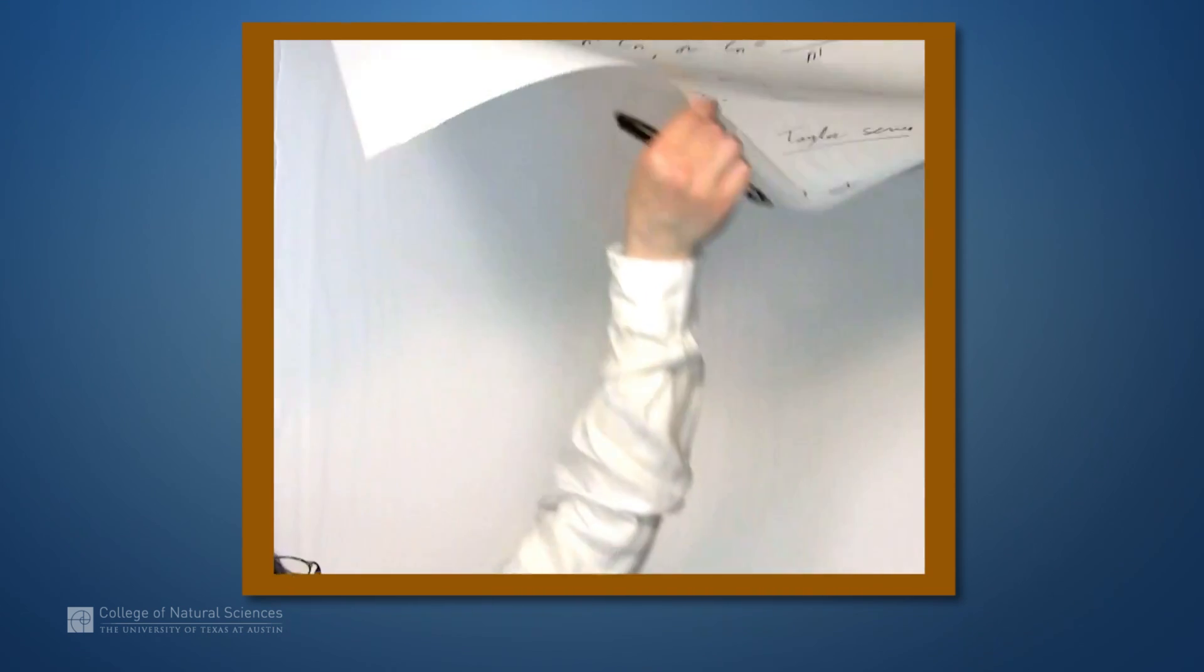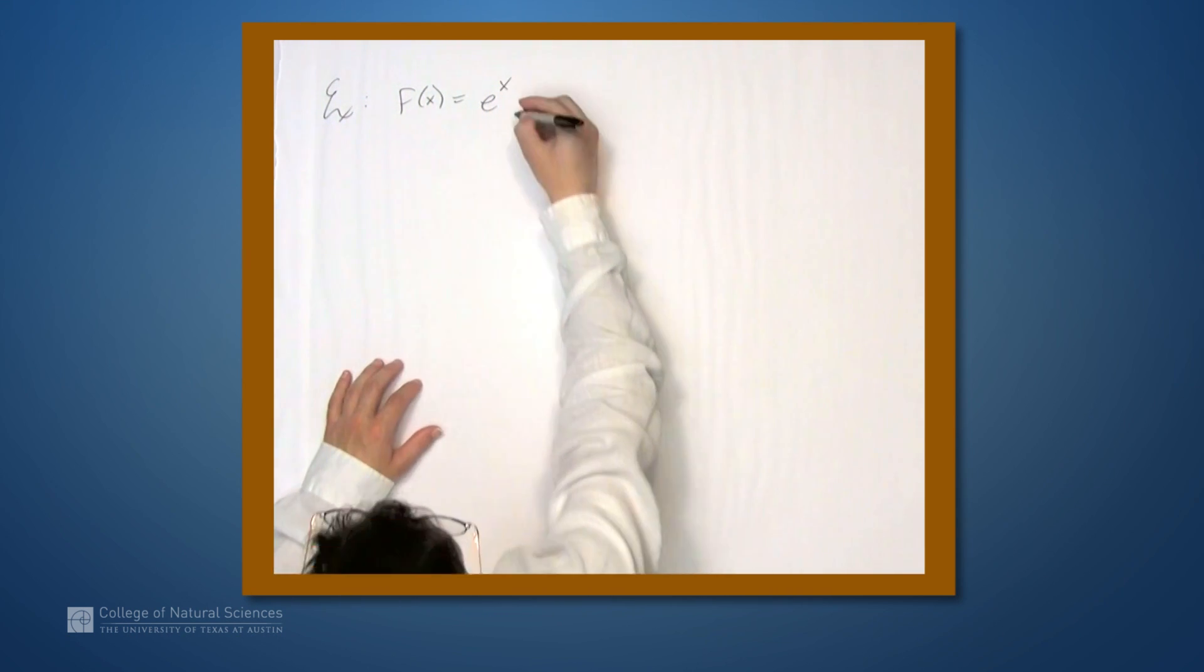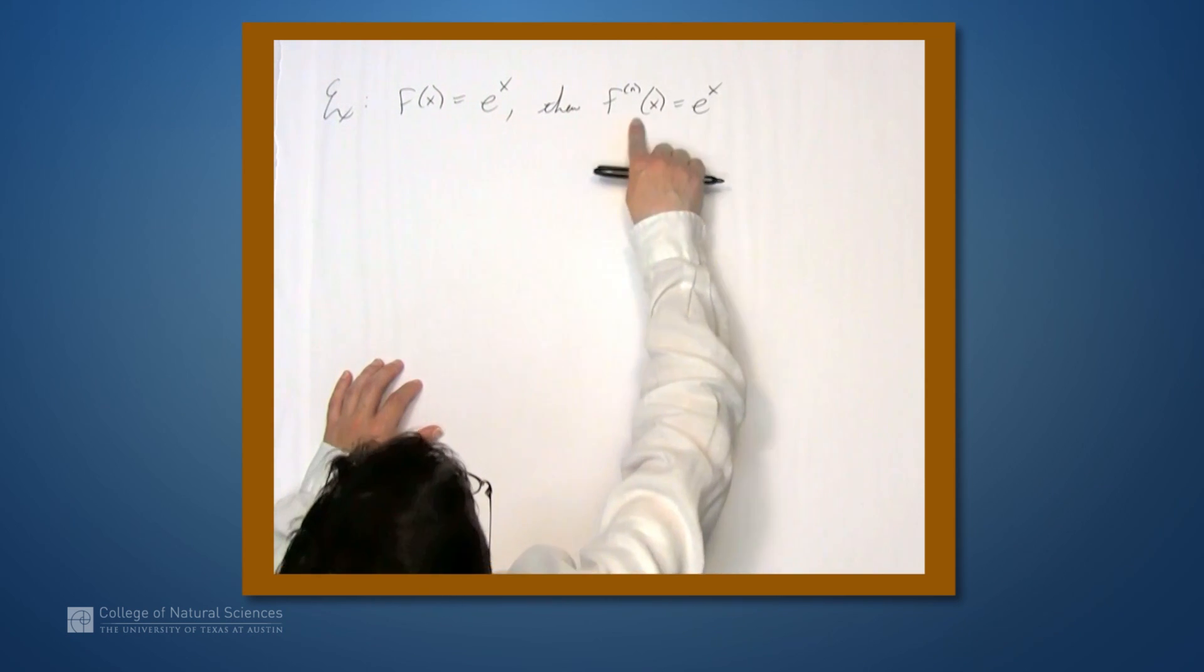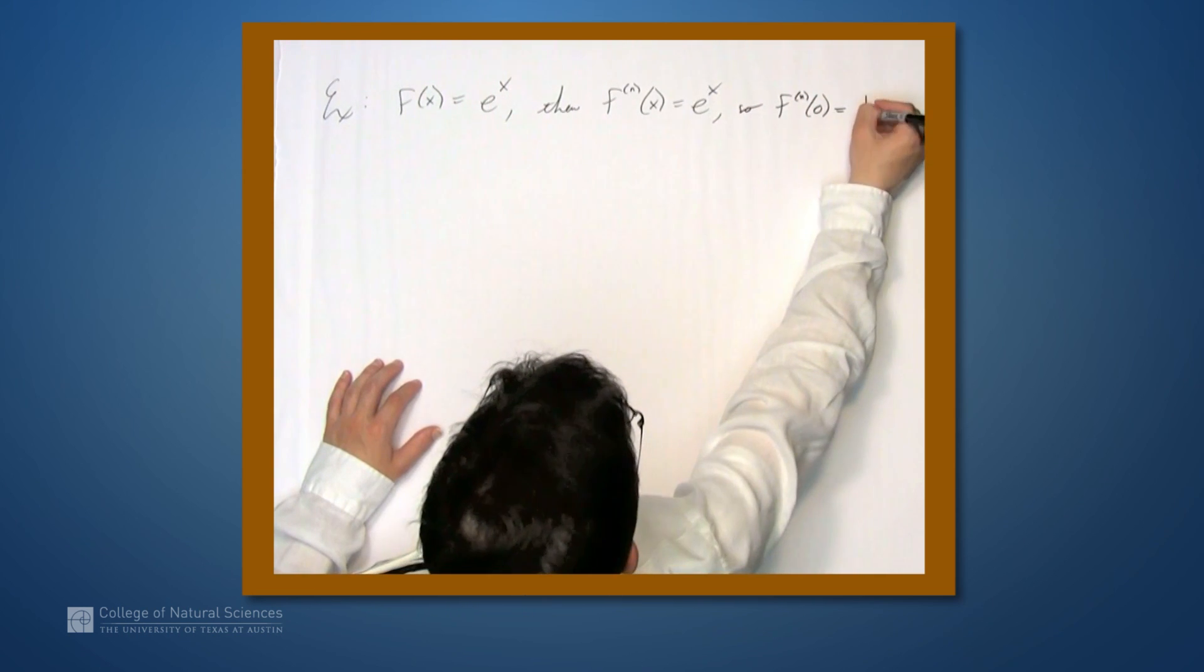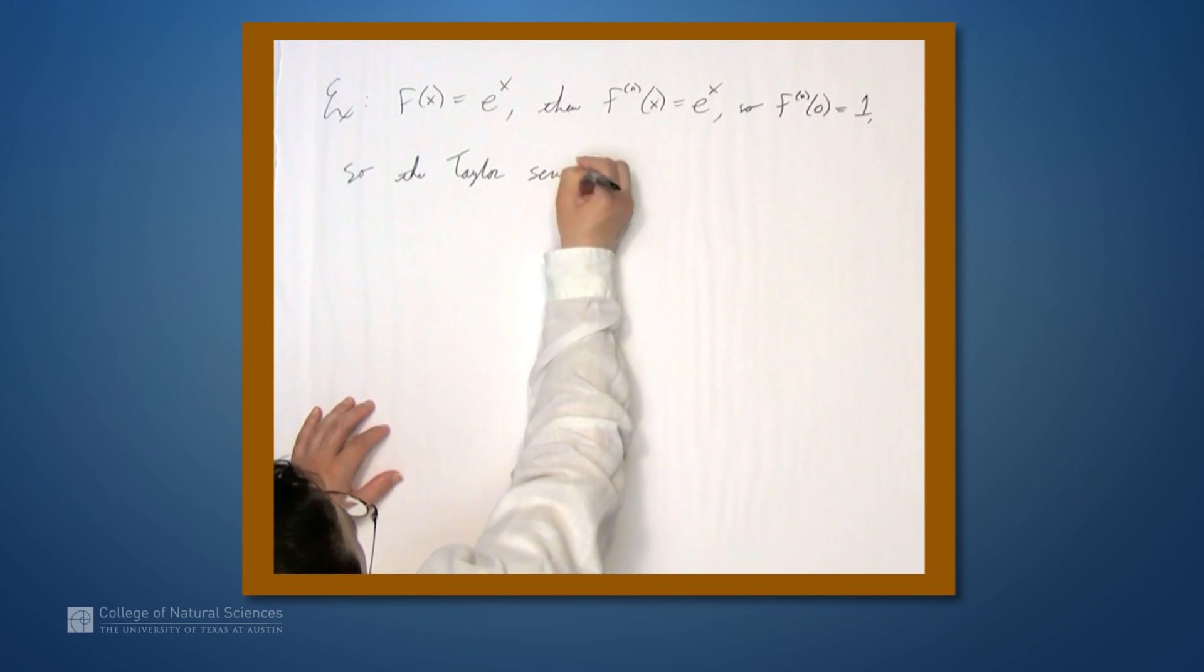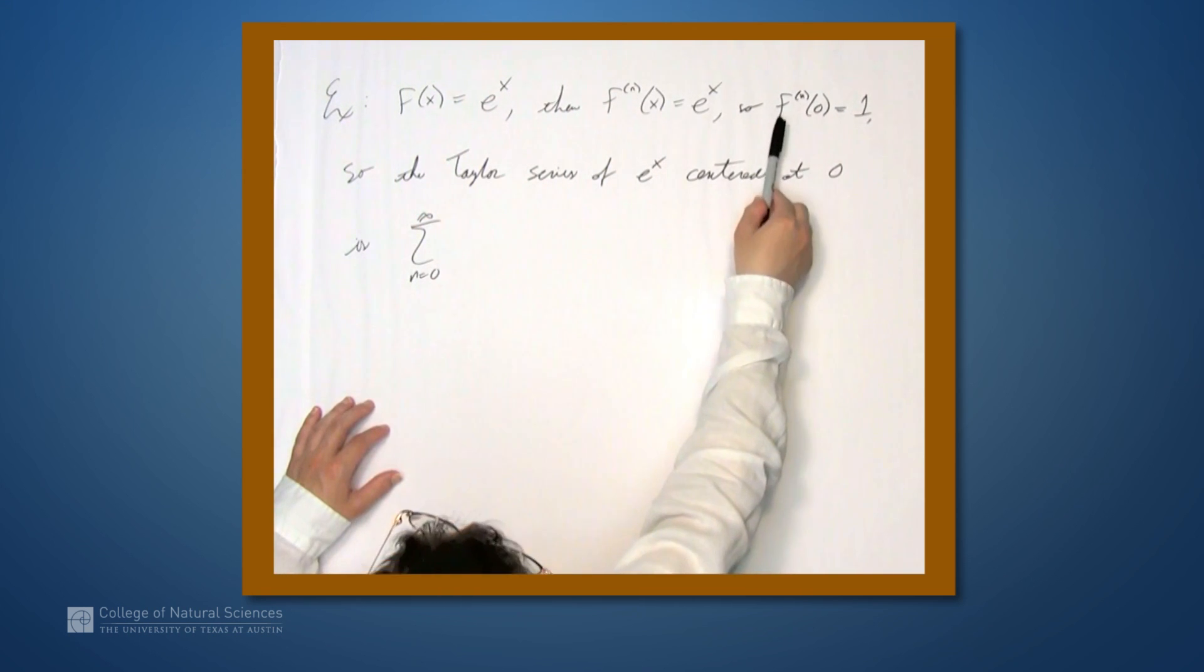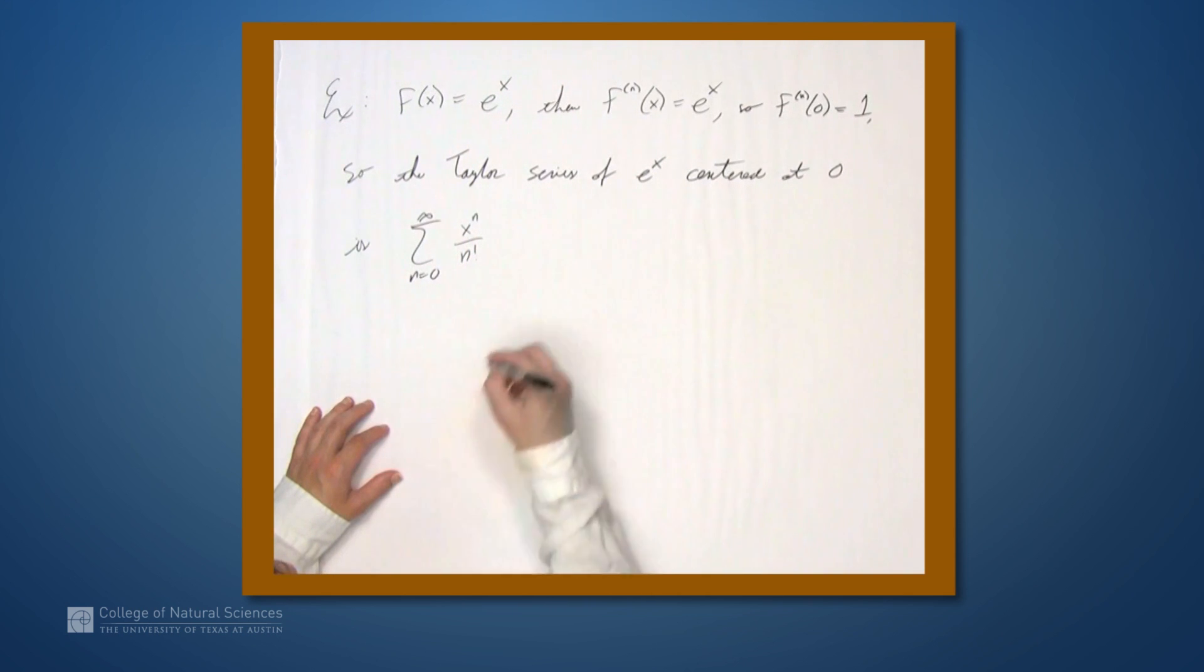Let's look at an example. If we set f equal to e to the x, then every derivative of f is simply e to the x. So if we want to find the Taylor series of e to the x centered at 0, we evaluate all of these at 0. So f of 0 is e to the 0, which is 1. So the Taylor series of e to the x centered at 0 is the sum from n equals 0 to infinity, nth derivative at 0, which is simply 1, divided by n factorial times x to the n. So that is simply x to the n over n factorial.